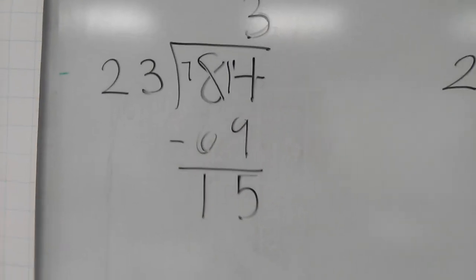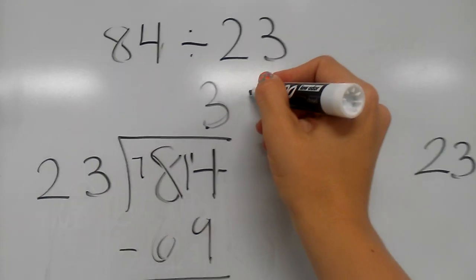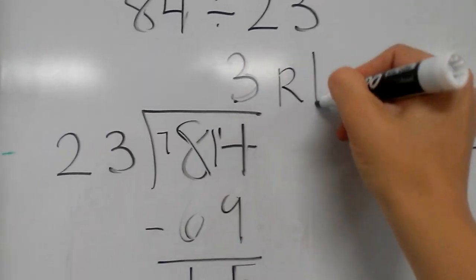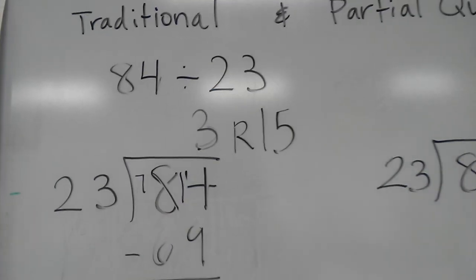And then 23 will not go into 15, which means that is my remainder. 3 remainder 15 is the answer to 84 divided by 23.